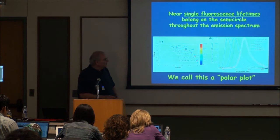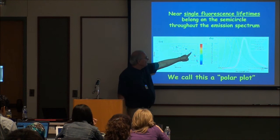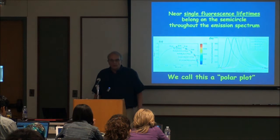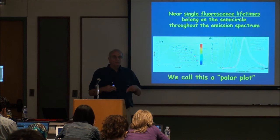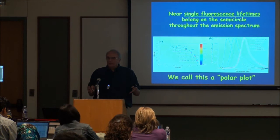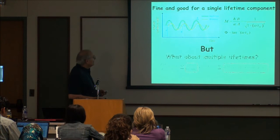Exactly where you lie on the semicircle tells you exactly the lifetime. All you have to do is make your measurement. A dye might sit at 1.7 nanoseconds, and you know exactly what it is — you don't fit anything. You just make the measurement, put it on a polar plot, and read it off. This is very useful in an image because we may have a million pixels, and we don't even want to think about fitting every pixel to exponentials.